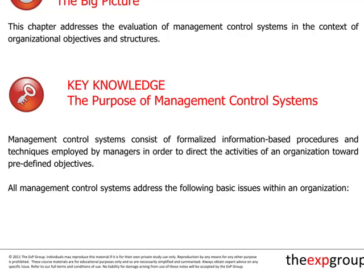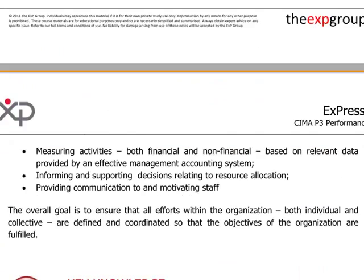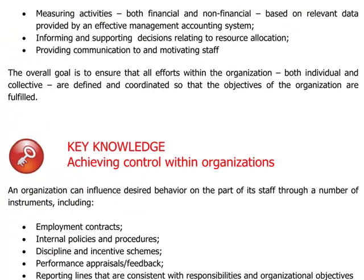What are the sorts of things that management control systems address within the organization? Some of those items would include measuring activities. There's a lot of things going on inside the company and management have to keep in touch with performance both in a financial sense and also non-financial. There's a tremendous amount of information which flows up through the organization so that management can fulfill their responsibility effectively in supervising the affairs of the company.